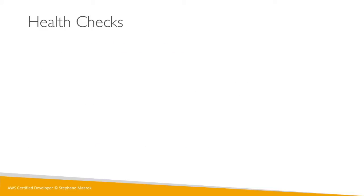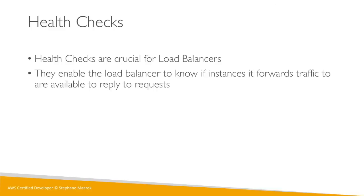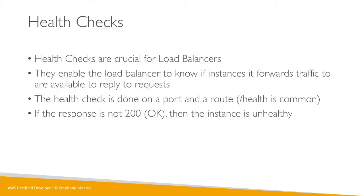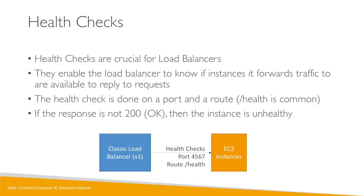Health checks are crucial for load balancers because they allow you to redirect traffic only to healthy instances. The health check is simple: you give it a port and a route — for example, /health is very common. If the instance responds with HTTP 200, it's deemed healthy; otherwise it's unhealthy. Here's what it looks like: the load balancer checks your EC2 instances on a given port and route, and if an instance is not okay, the load balancer stops sending traffic to it.